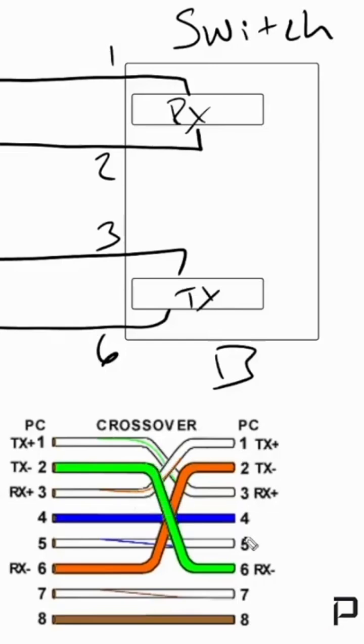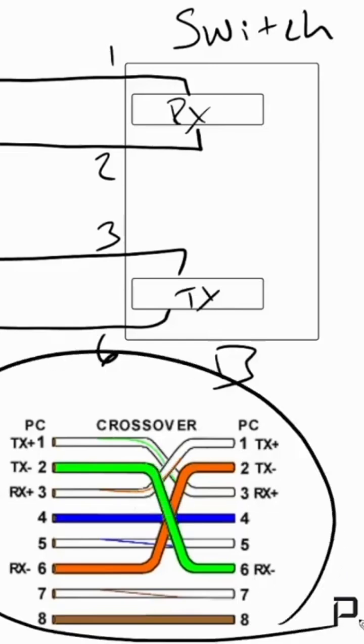We can see what that looks like here in this illustration of a crossover cable. We have the transmit pins here, that's one and two, and they cross over to six and three.